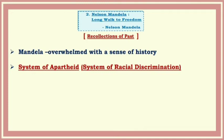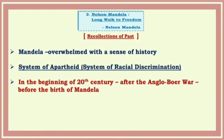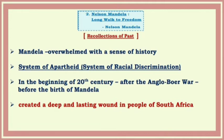This was a system in which white people were considered superior to the black people. Because of this system, black people of South Africa were not considered human beings — they were treated like animals with no rights. As you may remember, Mahatma Gandhi also faced this same system of apartheid, i.e. racial discrimination, in South Africa. This system came into existence in the beginning of the 20th century after the Anglo-Boer War, which was fought between the British and the Africans — even before Mandela was born. This system created a deep and lasting wound in the people of South Africa.